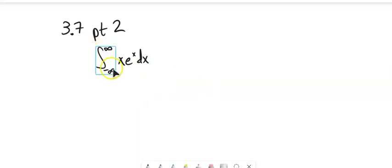So first off, we've got it running from negative infinity to infinity. So really, we're going to break it up into two pieces. We're going to run it from negative infinity to zero, and then from zero to positive infinity.